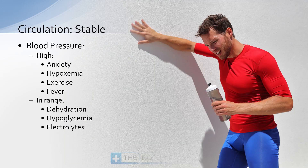Circulation is the C part of our ABCs. We can look at this from the standpoint of being stable or unstable — stable meaning the blood pressure. If the patient's blood pressure is high and they have tachycardia, we have to consider anxiety, hypoxemia, exercise, or fever. Those things could cause tachycardia with a high blood pressure.